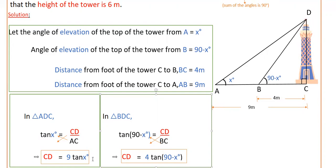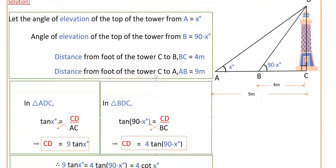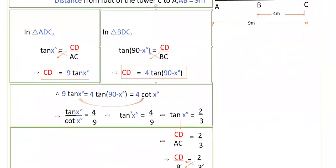So here CD is equal to 9 tan x and here CD is equal to 4 into tan 90 minus x. So you can equal these two, then 9 tan x is equal to 4 tan 90 minus x degrees.